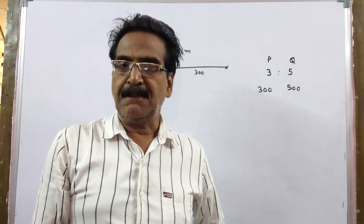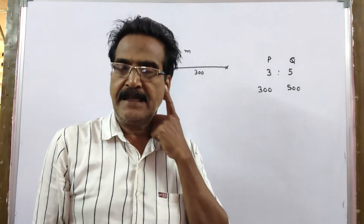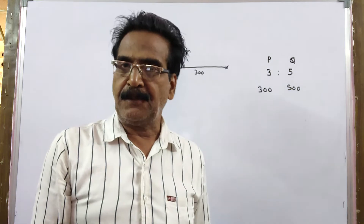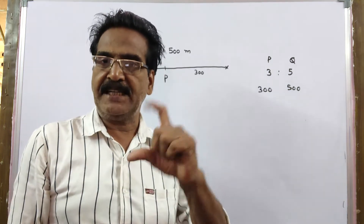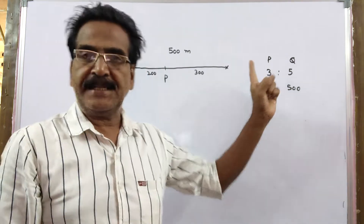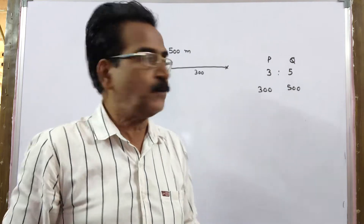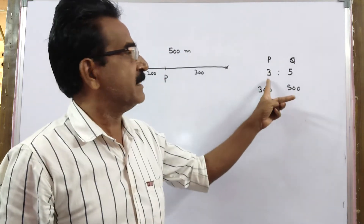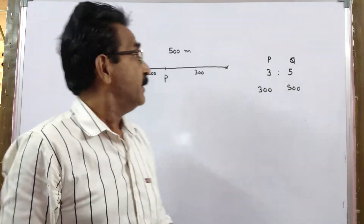Hi friends, good morning. Please look at the next problem in ratio and proportion. In a 500 meters race, the ratio of speeds of P and Q is 3 is to 5.